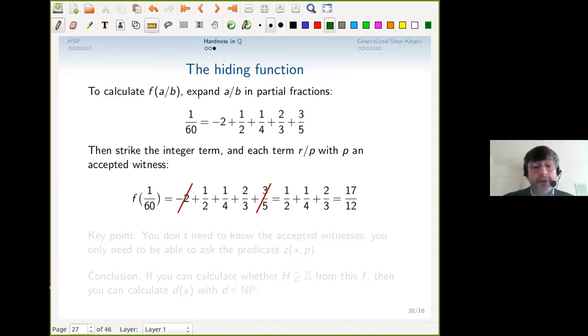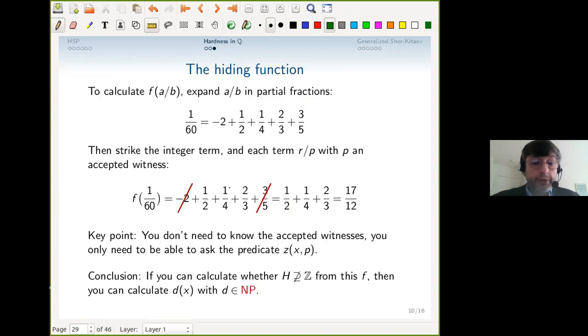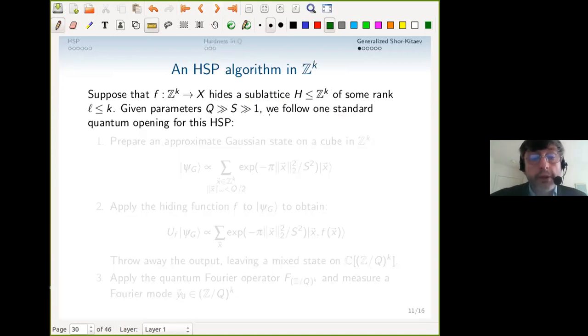For reduction in BQP, you need a factorization facility, but you have that. Now the idea is: given the input a/b, we want to compute the hiding function. You strike the integer term for the canonical form, then you strike every term r/p where p is an accepted witness. You can ask once you have the terms—you can do this in polynomial time. Then there's your H-periodicity, and there it is otherwise injective. The key point: you don't need to know the accepted witnesses, you just need to be able to guess and check. So the conclusion is, if you can know whether H is bigger than the integers, then you know the answer to the problem in NP. That's the reduction.